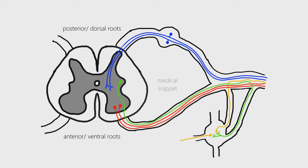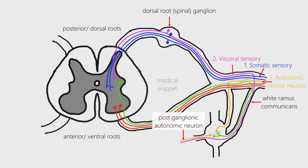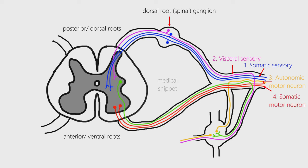The spinal nerves are mixed nerves, carrying both sensory and motor neurons. A typical spinal nerve consists of: a somatic sensory neuron, which carries sensory information from the skin, muscle, and joints to the spinal cord; a visceral sensory neuron, which carries sensory information from the organs to the spinal cord via the white rami communicantes and dorsal root ganglion; an autonomic motor neuron, which supplies the sweat glands, erector pili muscle, and smooth muscle of the blood vessels; and a somatic motor neuron, which is responsible for motor innervation of the skeletal muscles.